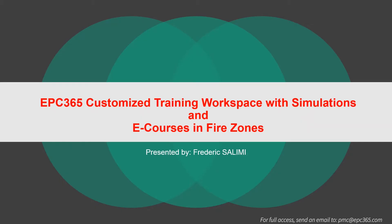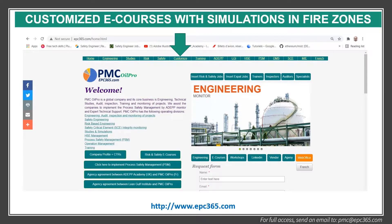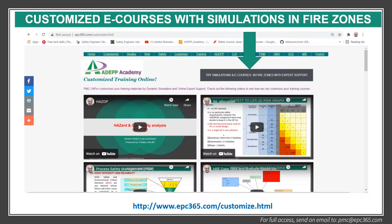Today we discuss about EPC365 customized training workspace with simulations and e-courses in FHIR zones. To start, you should open www.epc365.com and then click on 'Customize.' When you click on Customize, there are certain e-courses that we put here. You can see they are on video on YouTube. But to try our customized training, you should click on 'Try simulation and e-courses in FHIR zones with expert support.'